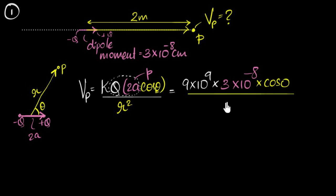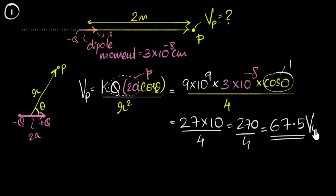R is this distance, two meters. So two square is four. And it's in meters, so I don't have to do any conversion. And therefore, all I have to do now is solve this. So I get cos zero is one. So this will be 27. This will be 10, divide by four. So that's 270 by four. That gives me four, six are 24. Three carries 30, four sevens are 28, 2.5. And there you have it. 67.5 volt, that's the potential here.